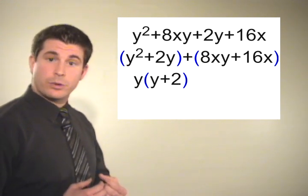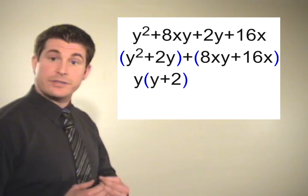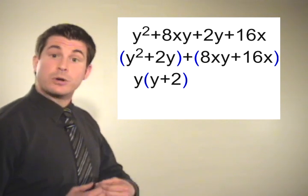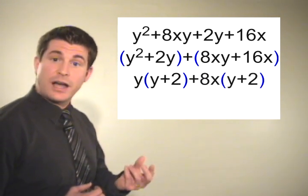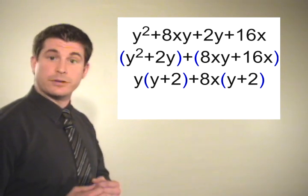In the second group, the greatest common factor is an 8x. So we're going to take out an 8x, and what is left behind is also a y plus 2.